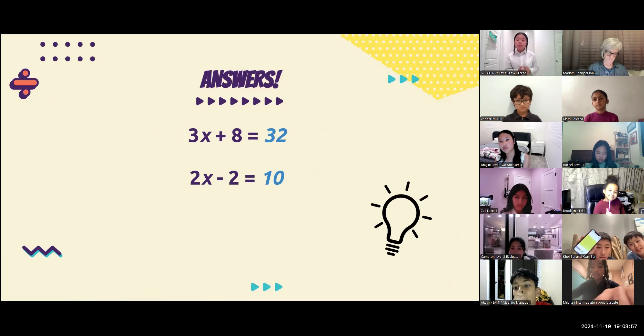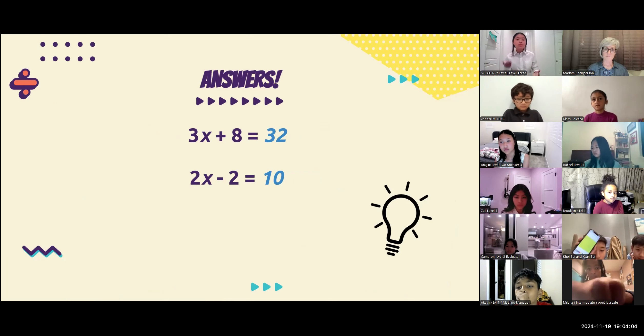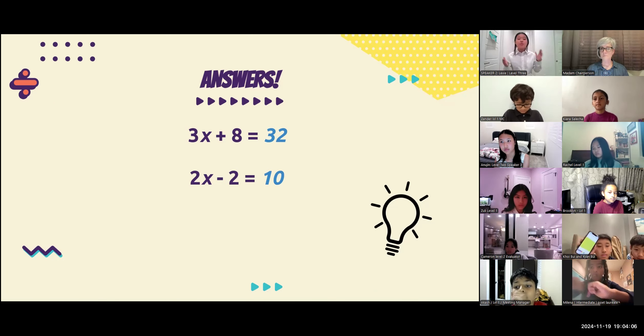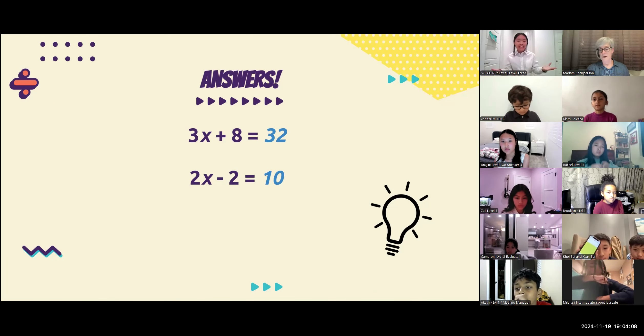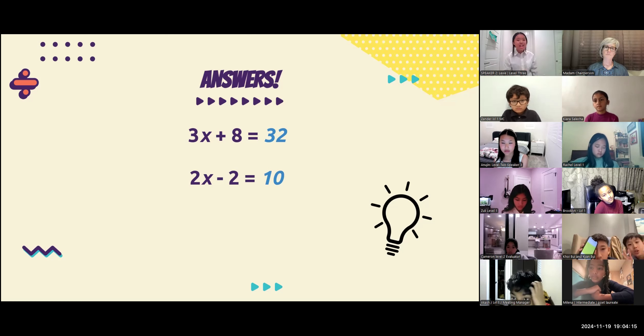But I appreciate that you tried anyway. The answer to problem number 1 was 32. Why is this? Because if you plug the number 8, which is the value for the variable, then you would have to multiply 3 by 8 because 3 is the coefficient and then you would get 24. 24 plus 8 equals, yep, that's right, 32.